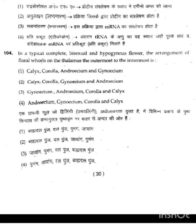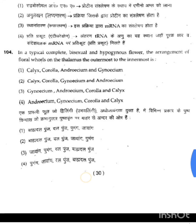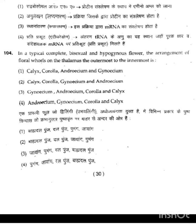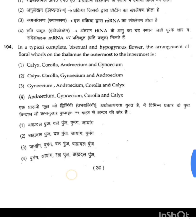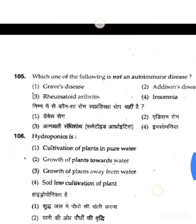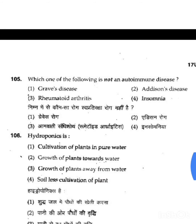Question 104: In a typical, complete, bisexual and hypogynous flower, the arrangement of floral whorls from outermost to innermost is — we need to observe the flower from outer to inner parts. First comes Calyx (the green leaf-like part covering the flower), then Corolla (the bright-colored petals that attract pollinators), then Androecium (the male sex organ), and finally Gynoecium (the female sex organ). So the answer matches option 1: Calyx, Corolla, Androecium, and Gynoecium.